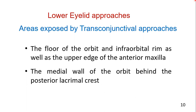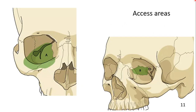The typical lower fornix transconjunctival approach in the lower eyelid exposes the floor of the orbit and infraorbital rim, as well as the upper edge of the anterior maxilla. Here you can see the area exposed by this approach is the floor of the orbit, the infraorbital rim, as well as the upper edge of the anterior maxilla. Via a pre- or transcaruncular approach on the medial side, the medial wall of the orbit behind the posterior lacrimal crest can be exposed. The combination of lower fornix and medial transconjunctival approach provides access to both previously mentioned areas at a time.